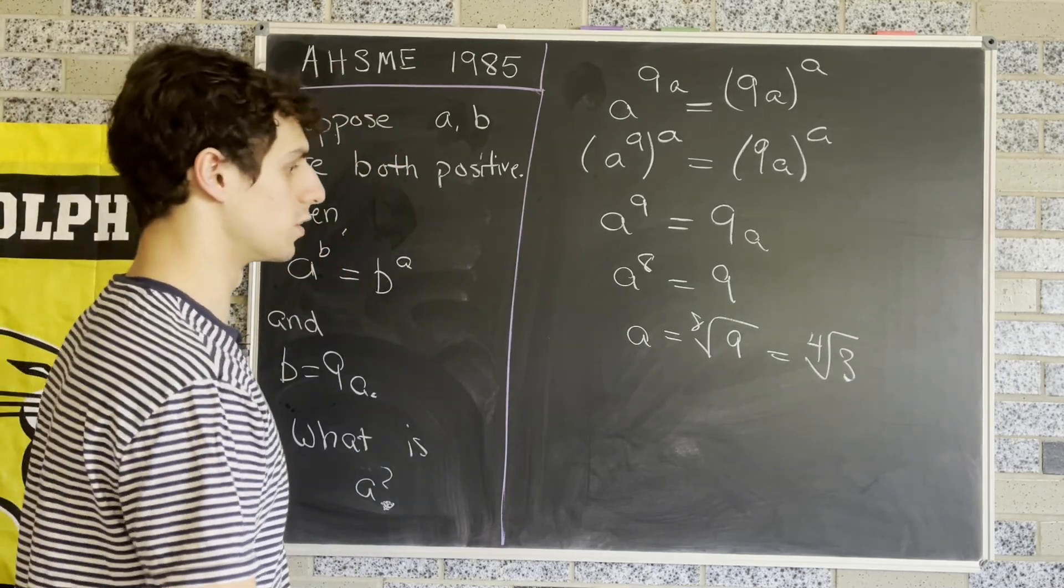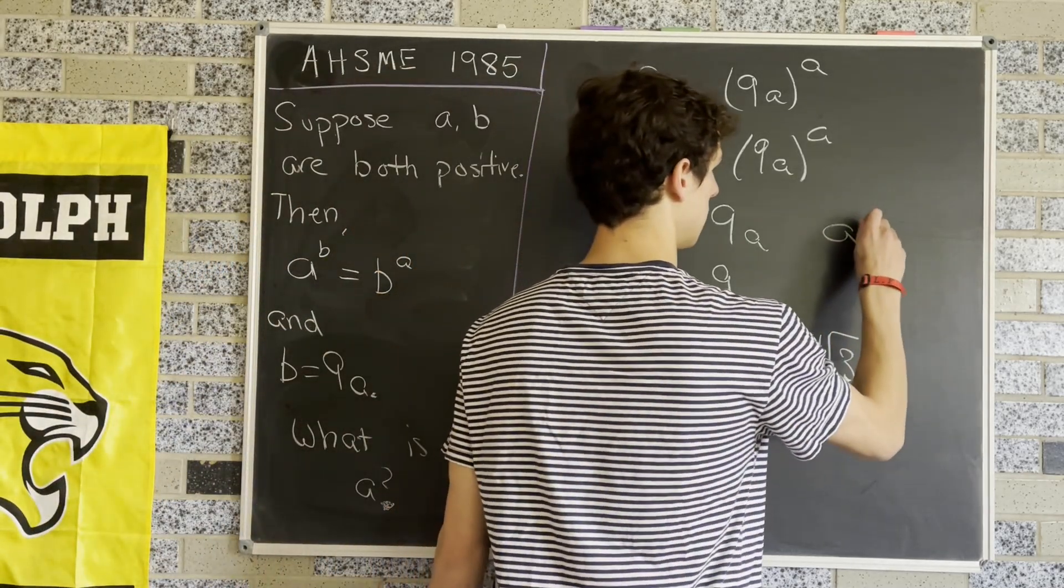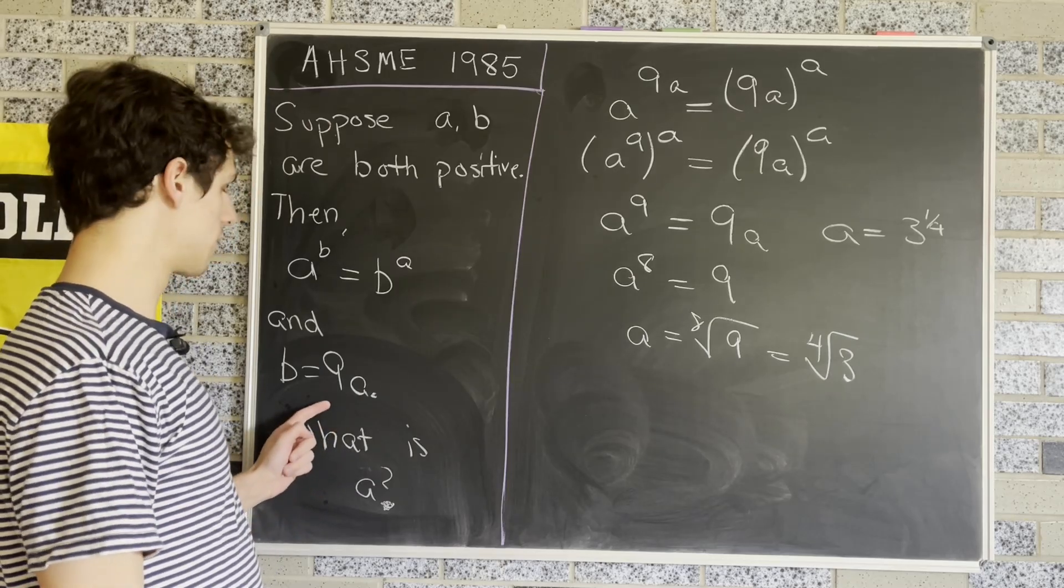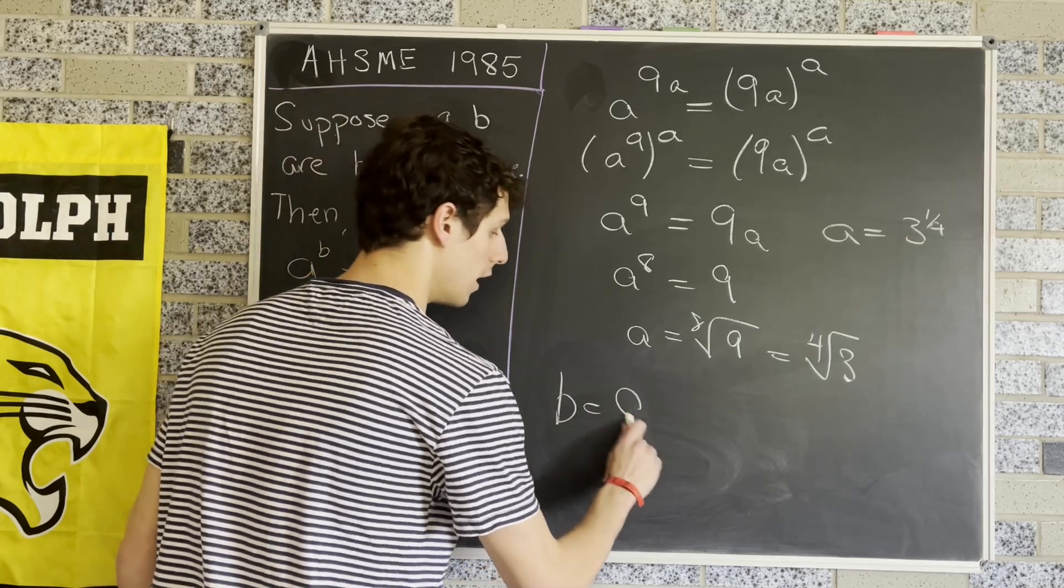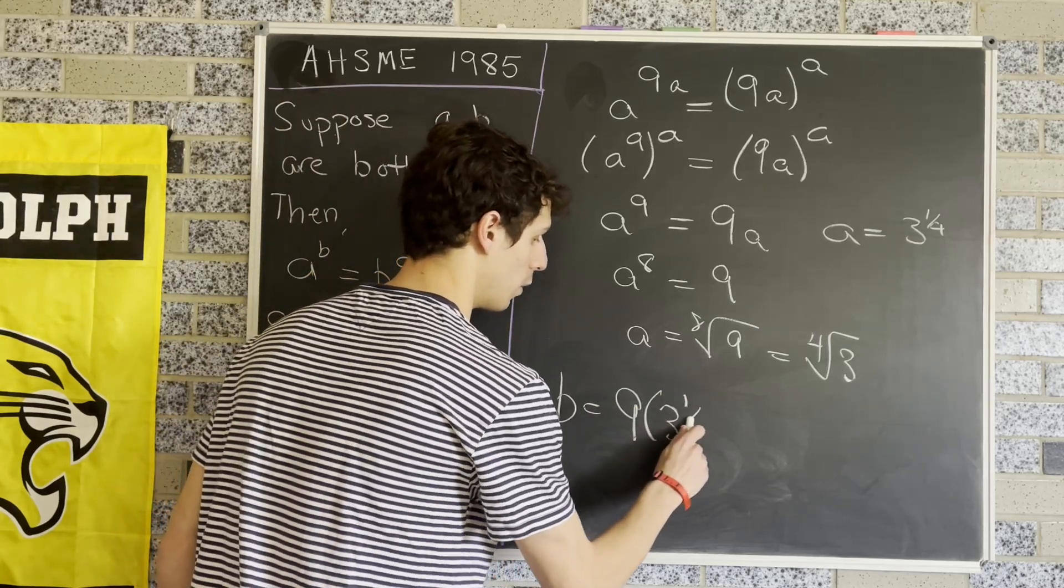So A equals the 4th root of 3. To find B, we multiply this value by 9, giving us B = 9 × 3^(1/4).